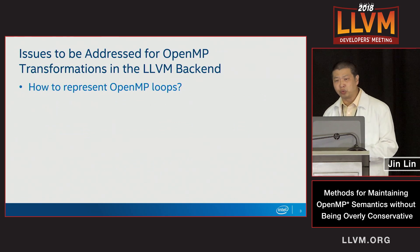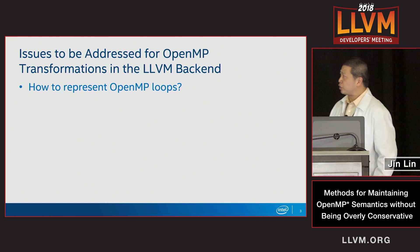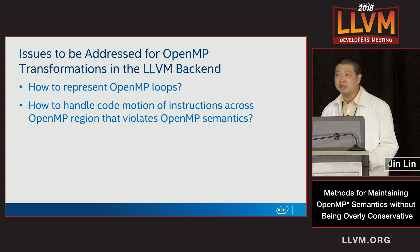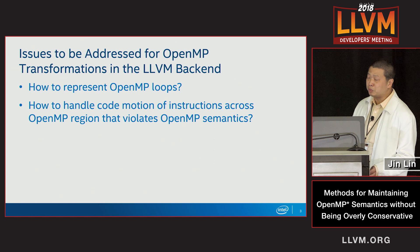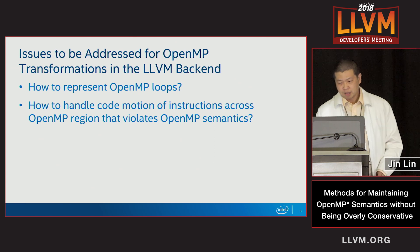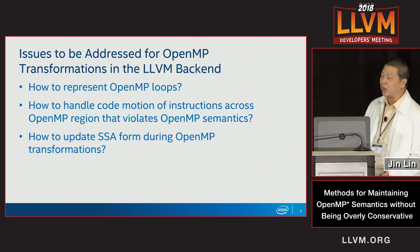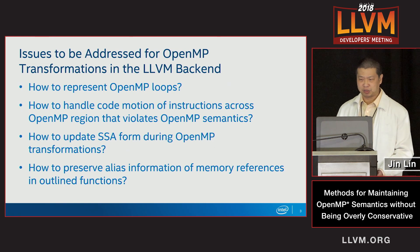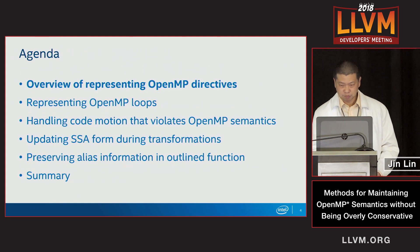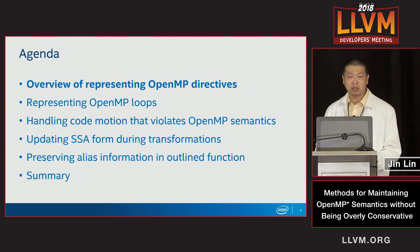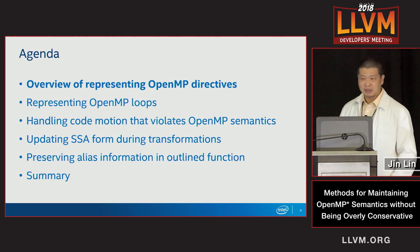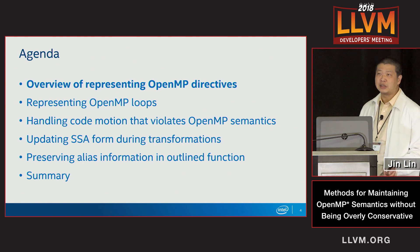In order to enable the back-end outlining effectively, we need to resolve the following issues. The first issue is how to represent the OpenMP loops. Second is how do we handle the code motion across the OpenMP region, and that code motion might violate the OpenMP semantics. The third question is how do we update the SSA form during the transformation. And the last question is how do we preserve the alias information for the outlined functions. The agenda covers an overview of the OpenMP representation, addressing these four issues, and a summary.